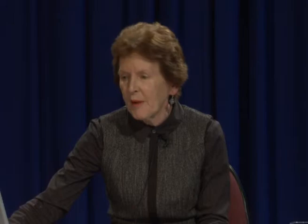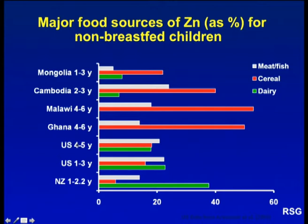We also used our dietary assessment method to assess the major food sources of zinc. This slide presents the data for non-breastfed children and compares the sources for Mongolia, Cambodia, Malawi and Ghana with data generated by Ken Brown and colleagues for US infants and toddlers. It's clear that the major source of zinc for children's diets from low-income countries is indeed from cereals, whereas in the US for infants it's dairy, and for older toddlers it's a mixture of dairy and meat.